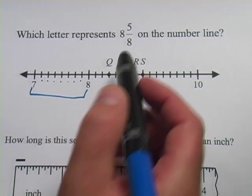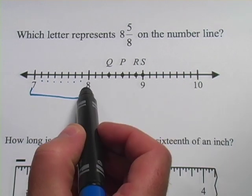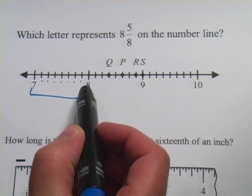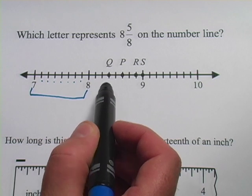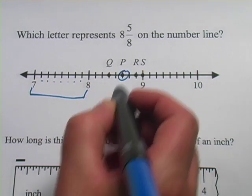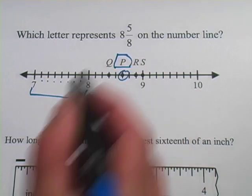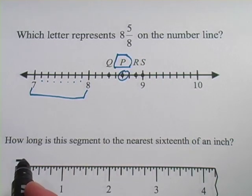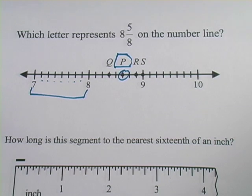So really, all we have to do to get to 8 and 5/8 is start at the 8 and count up 5/8. There's 1/8, 2/8, 3/8, 4/8, 5/8. So it would be right here, and that is P. So the answer to that one is P represents 8 and 5/8 on the number line.